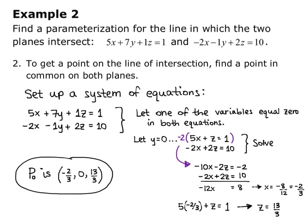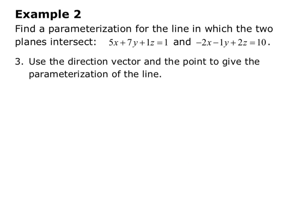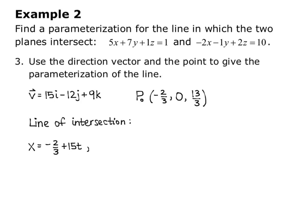On the last slide, we found our direction vector, and we're going to use the direction vector and the point to give the parametrization of the line. Our direction vector was 15i - 12j + 9k, and our point was (-2/3, 0, 13/3). So the line of intersection is x = -2/3 + 15t. Remember the direction vector i component is attached to the t for x. y = -12t, and z = 13/3 + 9t. So there's our line of intersection written in parametric form.